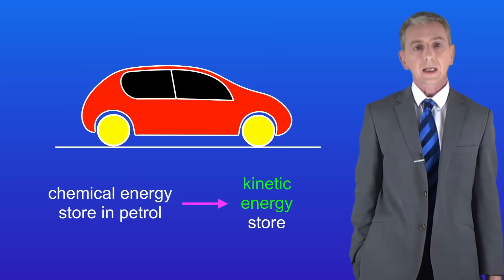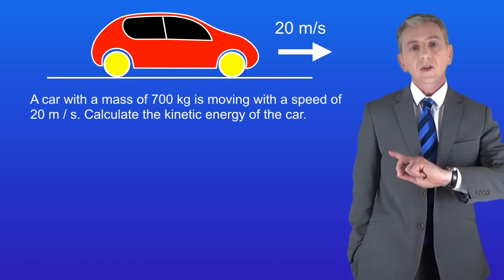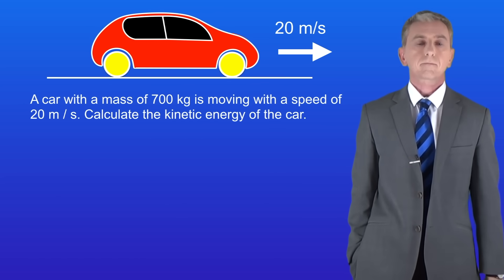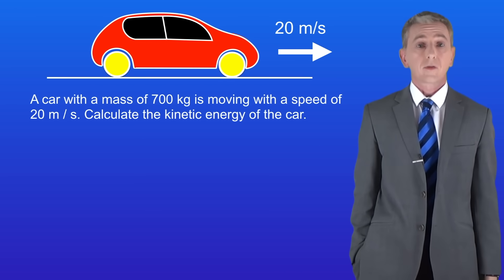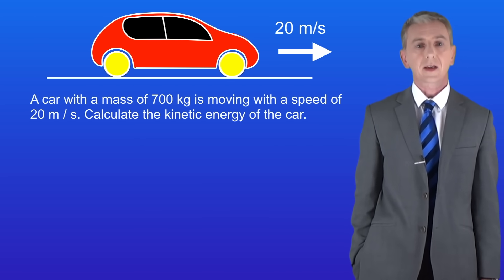So we're going to calculate kinetic energy of a moving object. Here's a sample question. A car with a mass of 700 kilograms is moving with a speed of 20 meters per second. Calculate the kinetic energy of the car.